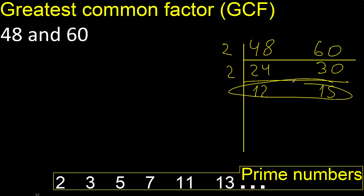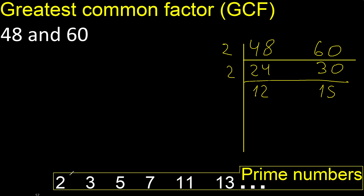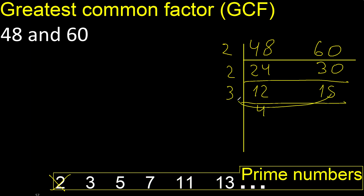Cannot be divided by 2 because 15 cannot be divided by 2. Can be divided by 3. Therefore, divide by 3: 12 divided by 3 is 4, and 15 divided by 3 is 5.